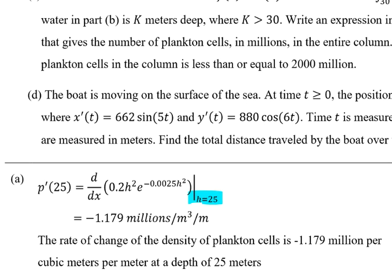The proper interpretation is: the rate of change of the density of plankton cells is negative 1.179 million per cubic meter per meter at a depth of 25 meters.